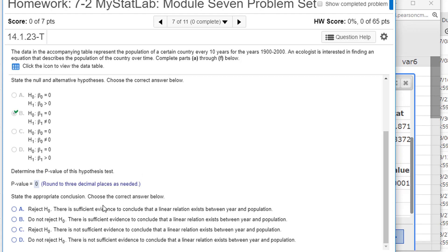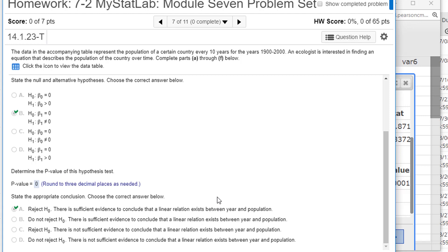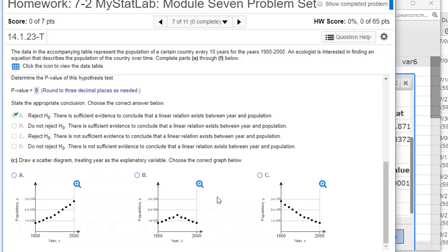State the appropriate conclusion. If the p-value is zero, you always reject the null hypothesis and you say there is sufficient evidence to conclude that a linear relation exists between the two variables. It's significant. Let's continue.